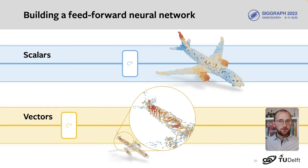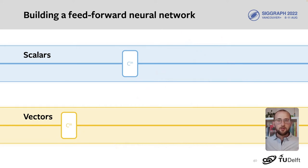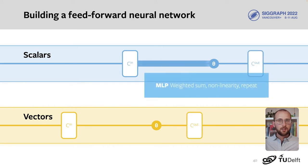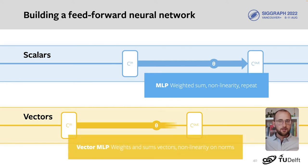Next, computing features. First of all, we can learn per-point features using multilayer perceptrons. We take a weighted sum of the input features, apply a nonlinearity, and repeat for a number of layers. For vectors, this process is similar. Take a weighted sum of the vectors, apply a nonlinearity to the vector norms, and then repeat. Note that each of these operations acts on vectors as a whole and does not depend on the coordinate system.